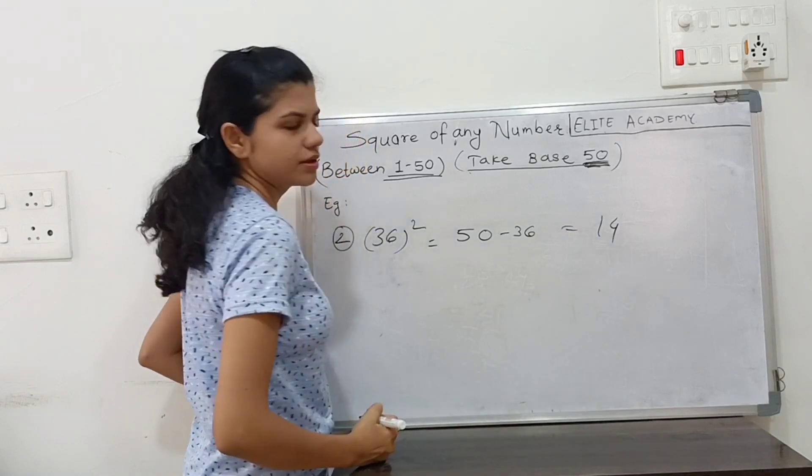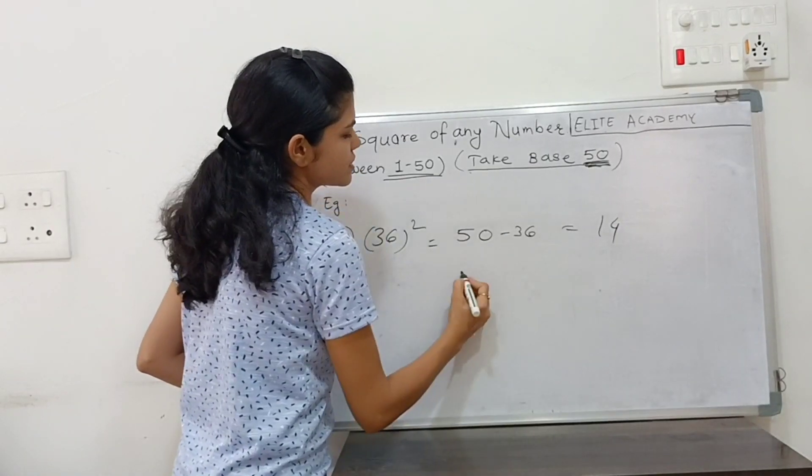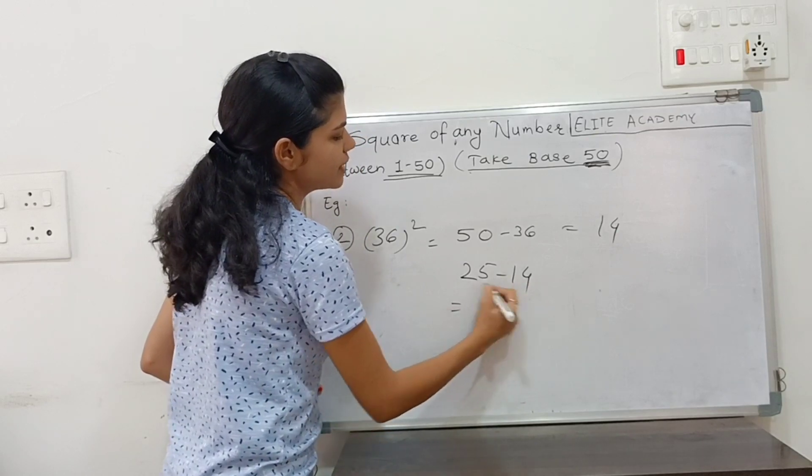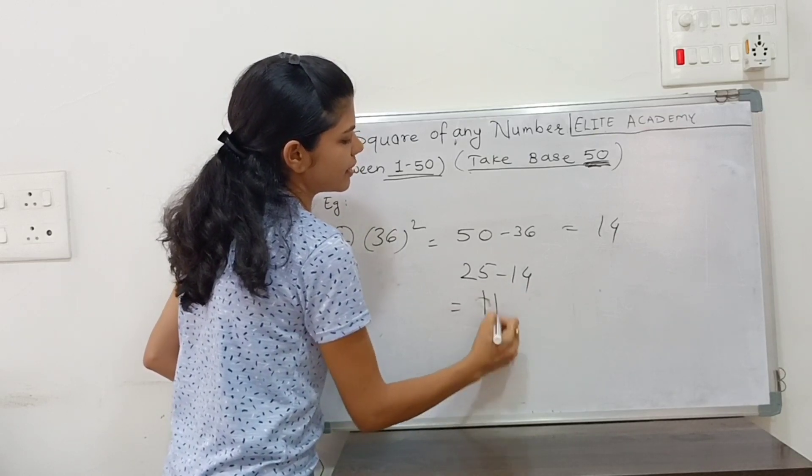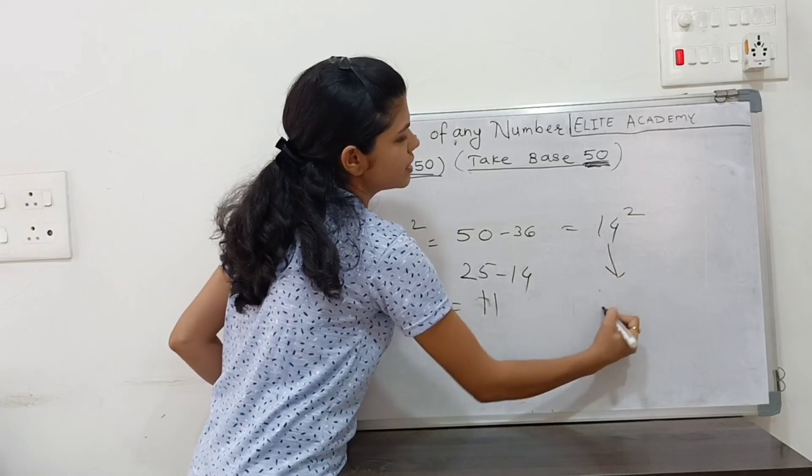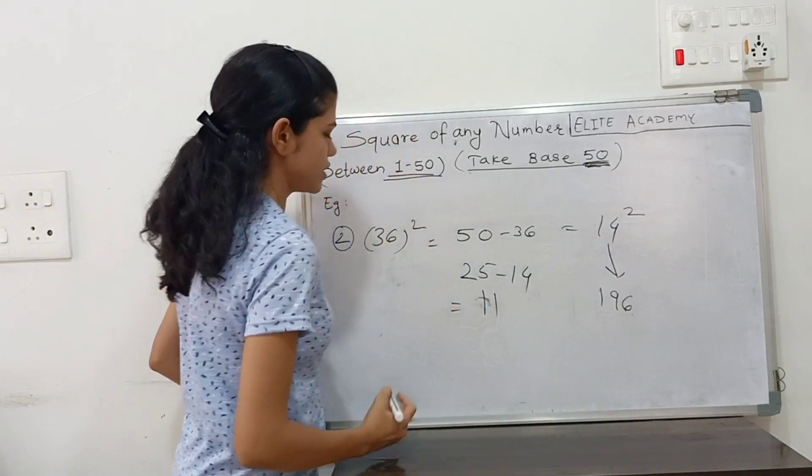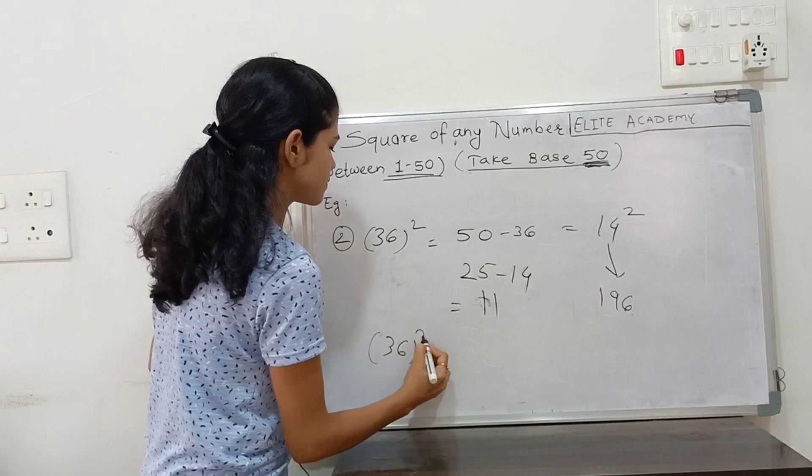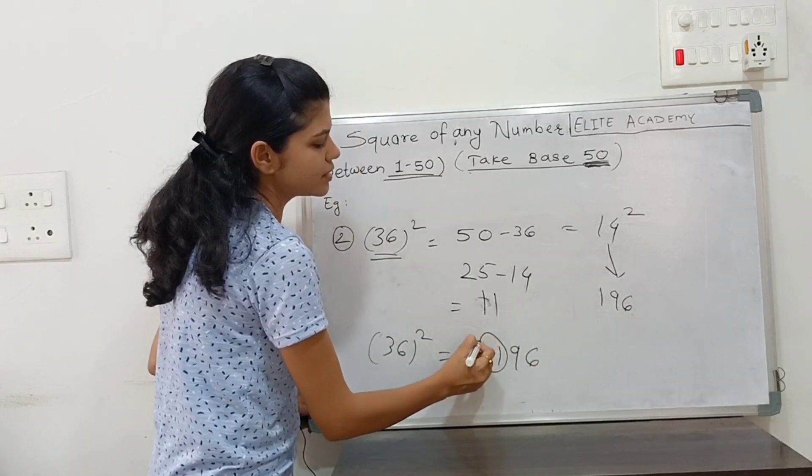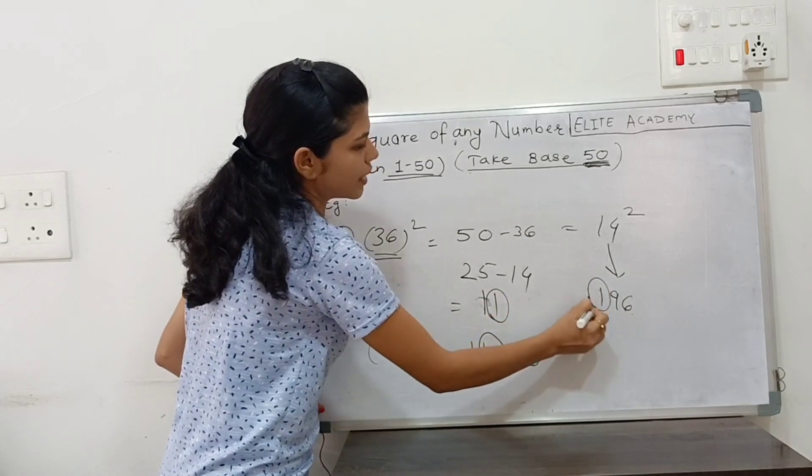Again, subtract 14 from 25, we get 11. Take the square of 14, which is 196. Therefore, the answer for 36 squared is 11, 196. Add these two numbers to get 1296.